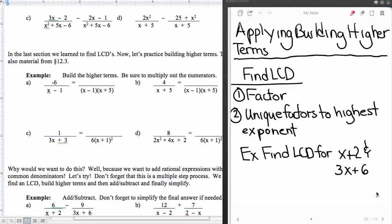All right, now what we're going to do is apply this building in the higher term. And applying the building in the higher term, we're going to have to find an LCD first. So let's recall what finding an LCD was in practice. We're going to have to factor to find an LCD and then the unique factors to the highest exponents. So we are going to find the LCD for x plus 2 and 3x plus 2. Well, 3x plus 2 has a common factor of 3, so we'll factor that out, and that leaves us with 3 times x plus 2.